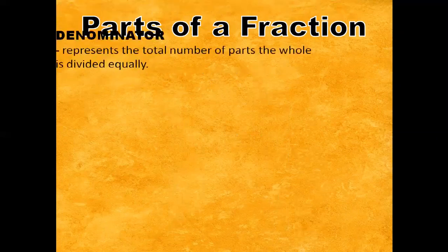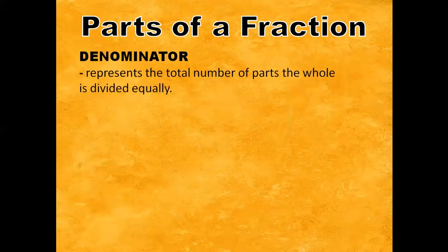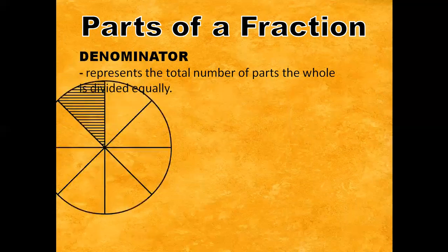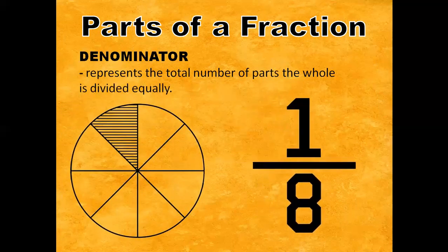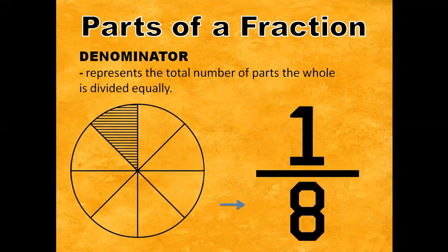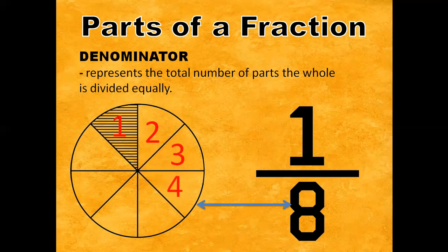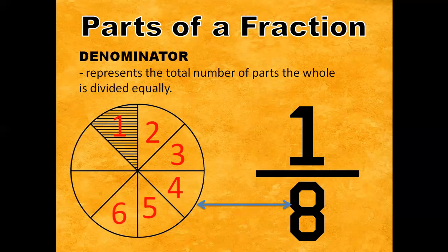Next, the denominator. The denominator represents the total number of parts the whole is divided equally. For example, we have one-eighth, so it means that the whole is divided equally into eight parts. So we have one, two, three, four, five, six, seven, and eight.